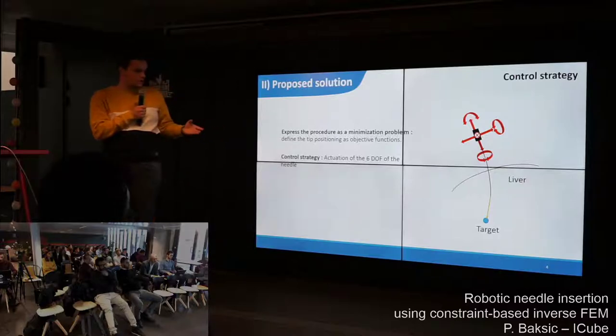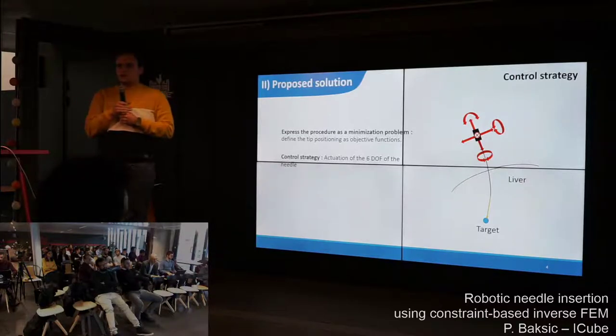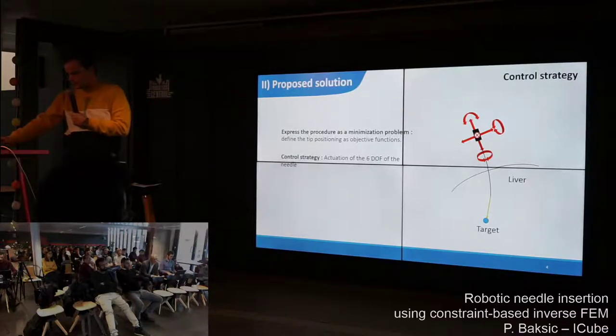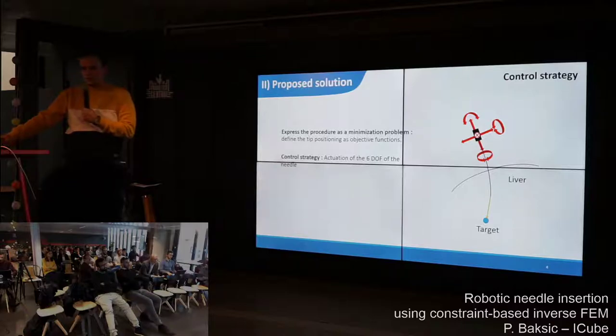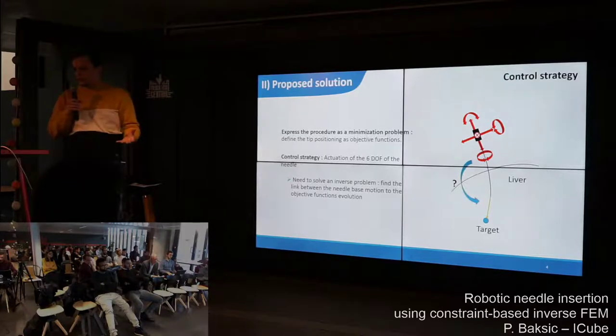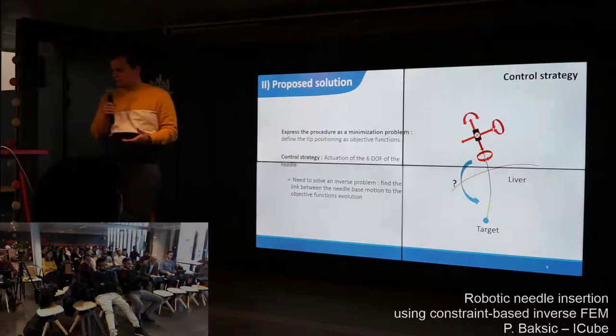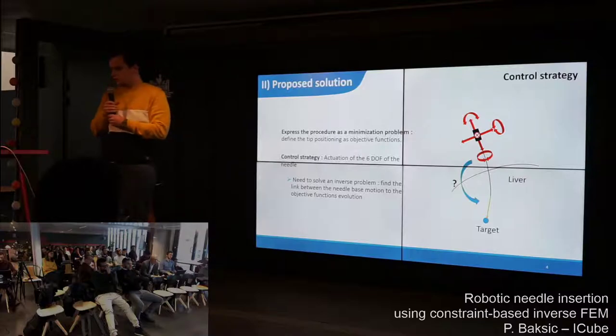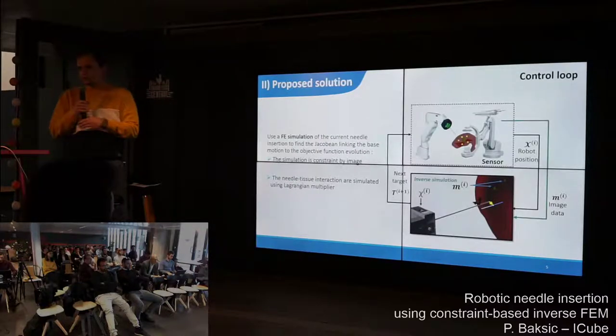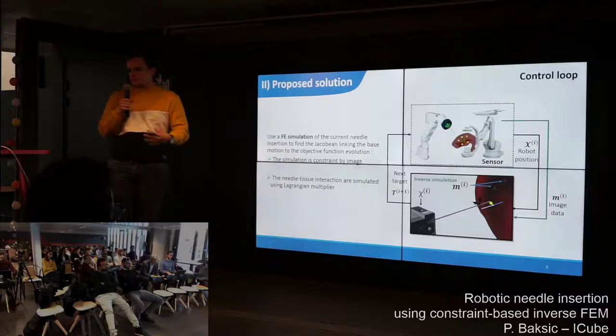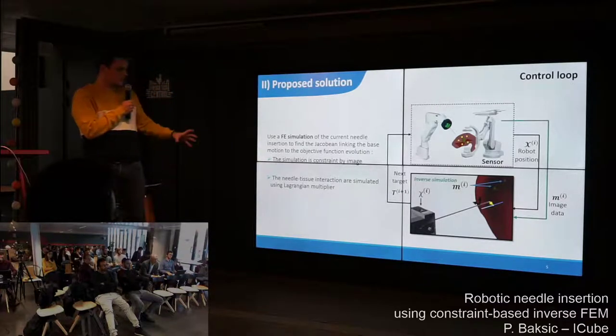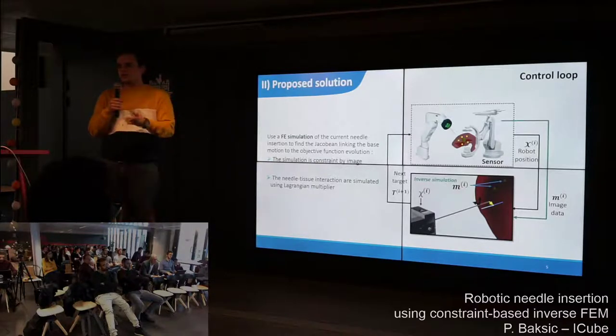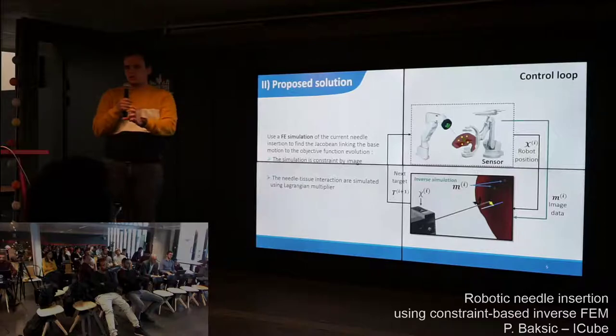For this to be done, we rely on the actuation of the six DOF of the needle. Using these six DOF, you need to solve an inverse problem, which is the link between the needle base motion and the objective function evolution. We propose to use an FE simulation inside the robotic control loop. This simulation will compute the Jacobian linking needle base motion to objective function evolution.